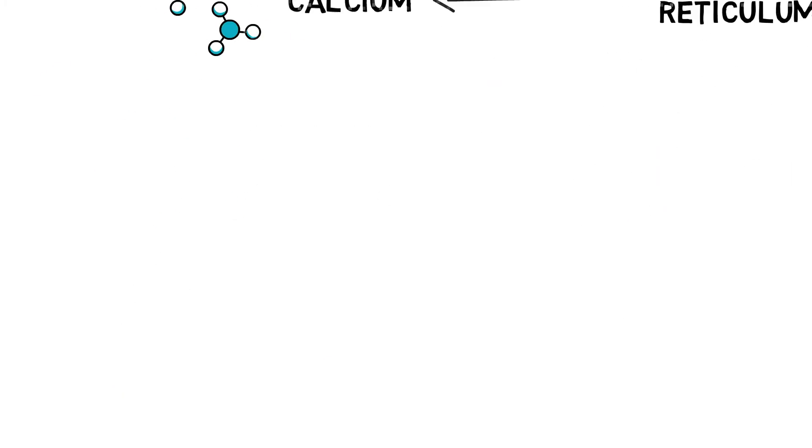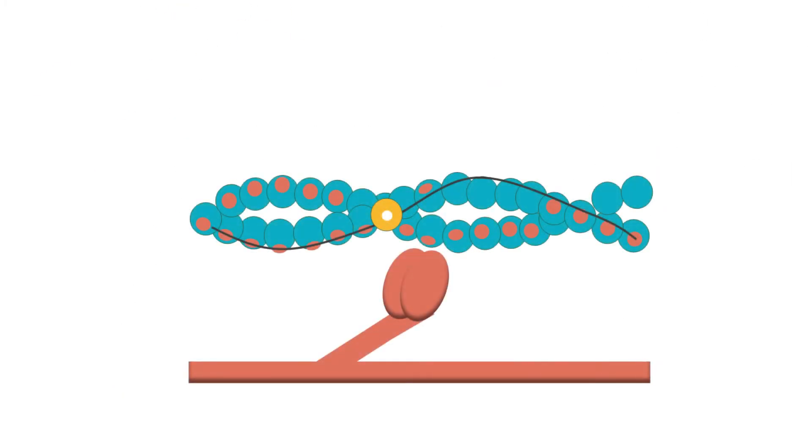The calcium then binds with troponin, removing the blocking action of tropomyosin, which exposes the crossbridge binding site for myosin.